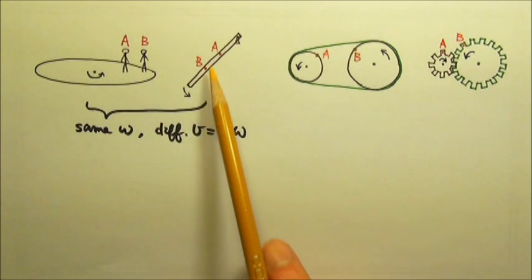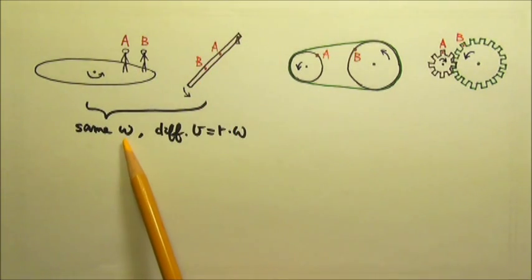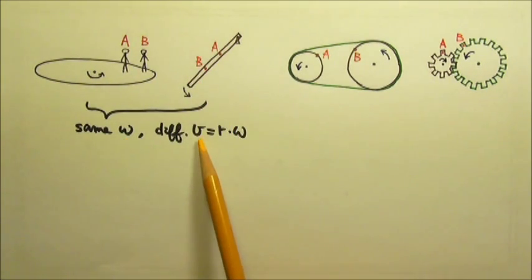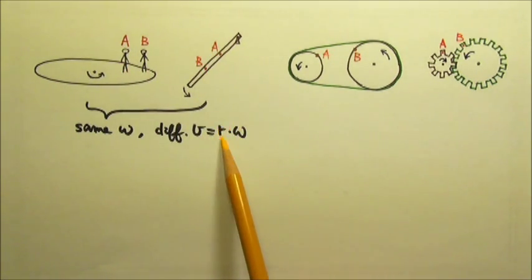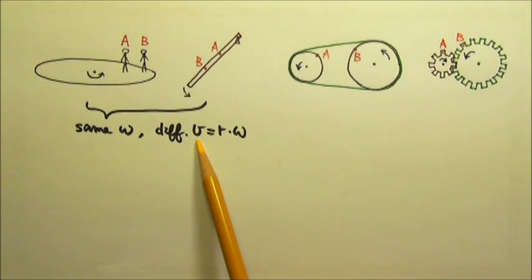For these two, they rotate together, so they have the same angular speed. And since v equals r omega, and A and B have different r, they have different linear speeds.